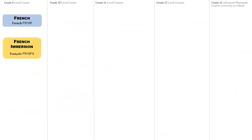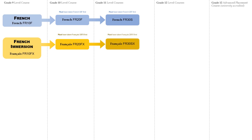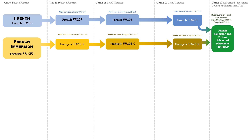French Immersion students have a mandatory Grade 9 course, with French as an optional course for students in the English track. Then a mandatory French Immersion course in Grade 10, a mandatory French Immersion course in Grade 11, and a mandatory French Immersion course in Grade 12. An Advanced Placement French course is also an option for students in Grade 12.